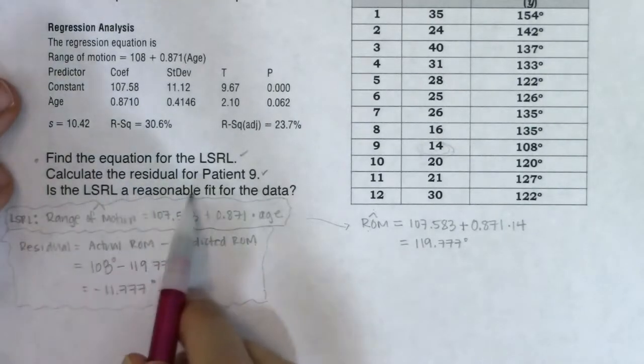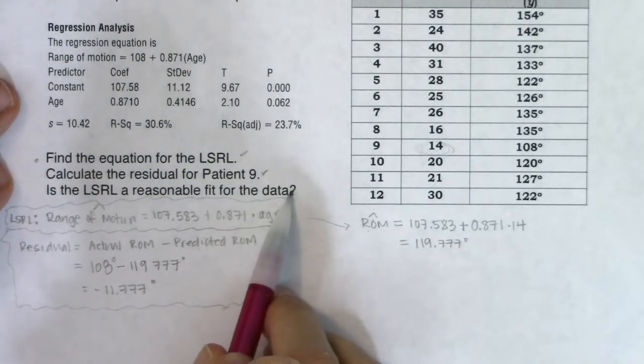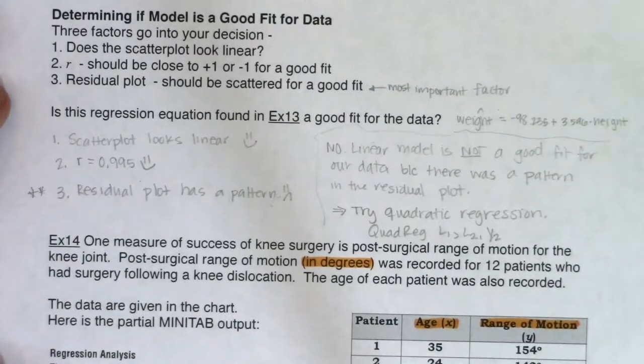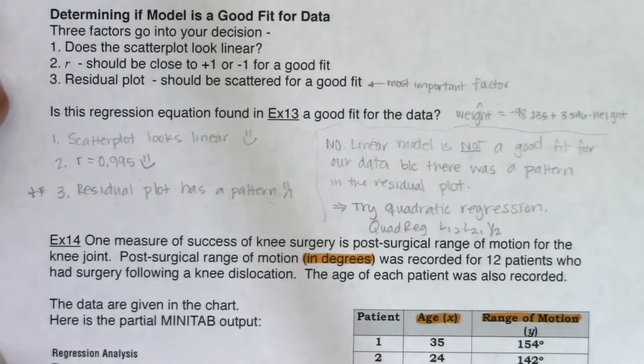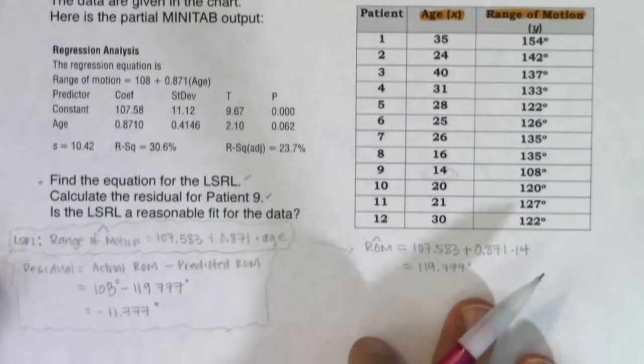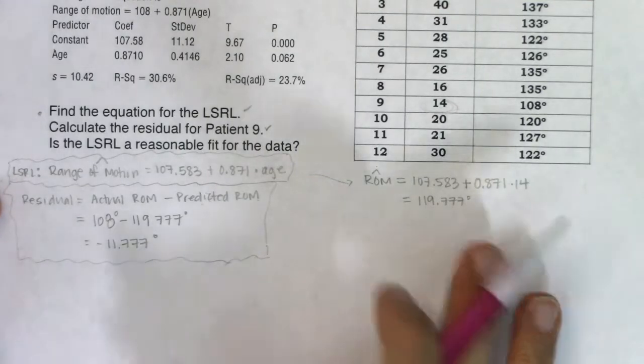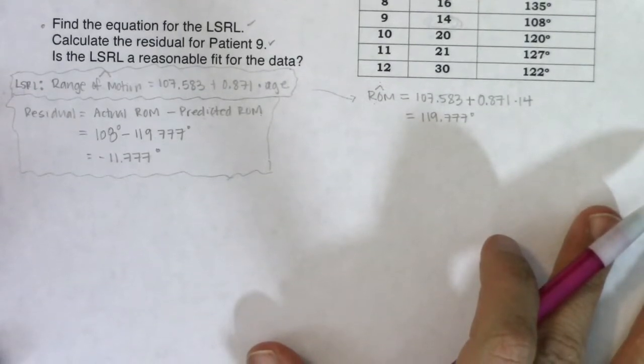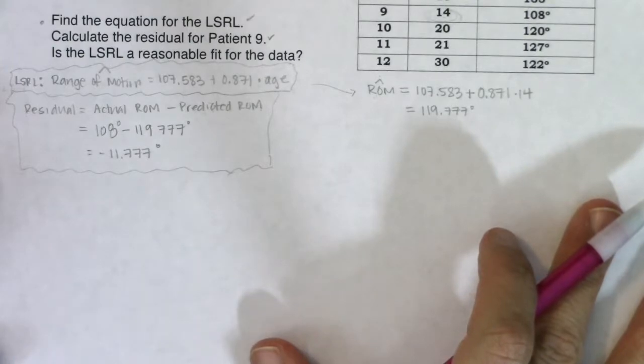The third one is: is the LSRL a reasonable fit for the data? Well let's find out. If I want to answer that question, we want to see if we can address all three factors. Every time you go to figure out if our model's good or not, you might not have all three of these. You do the best you can. I can make a scatter plot, I can find my R, and I can actually make a residual plot because I have the raw data here. So I should be able to address all three of those factors.